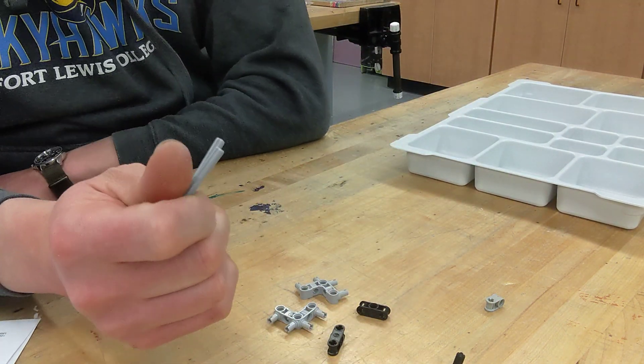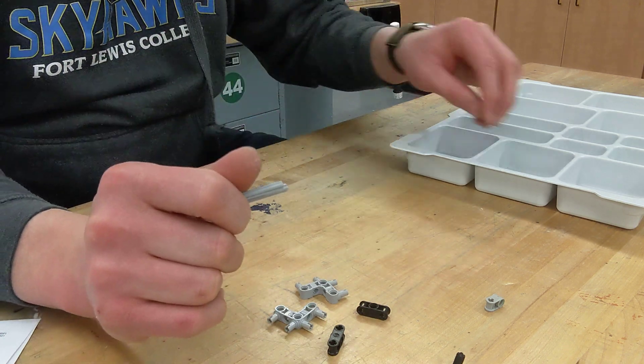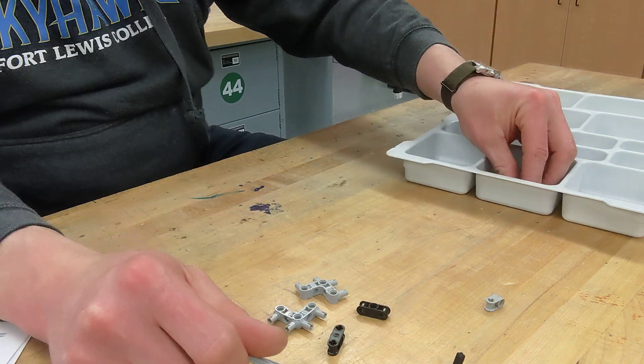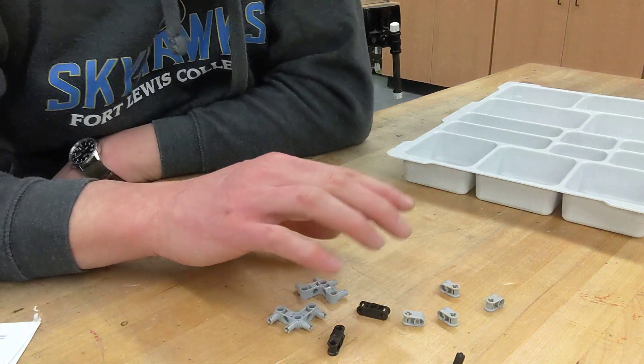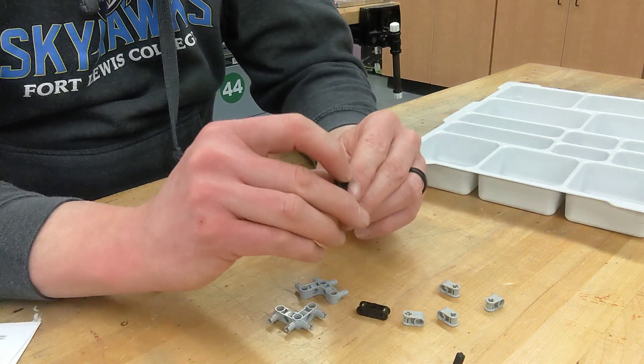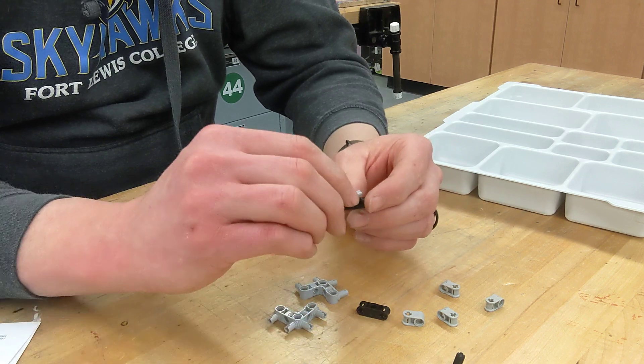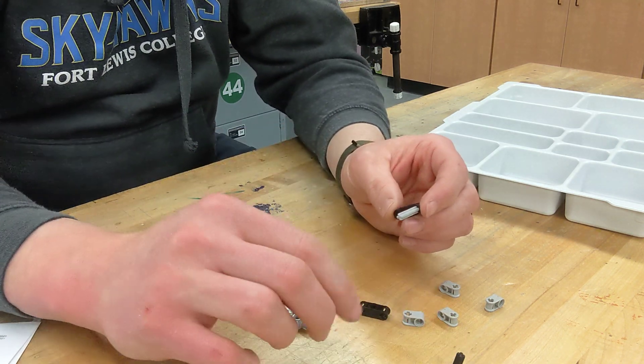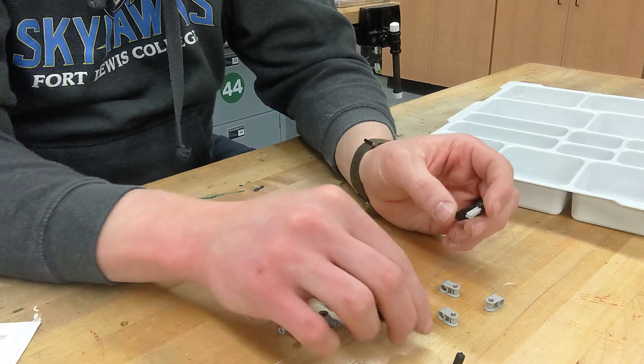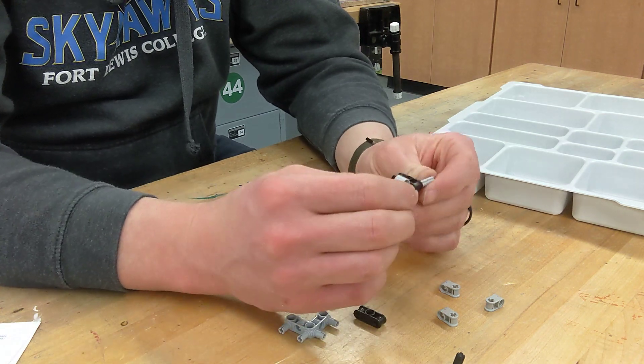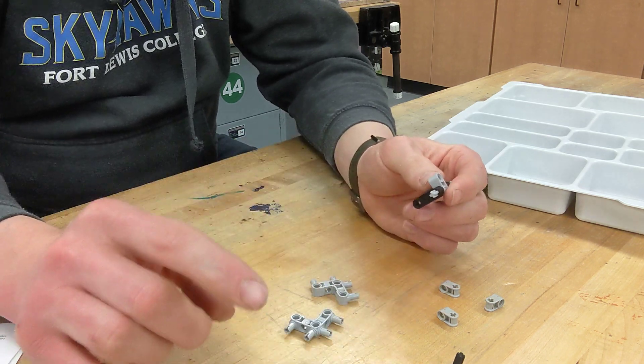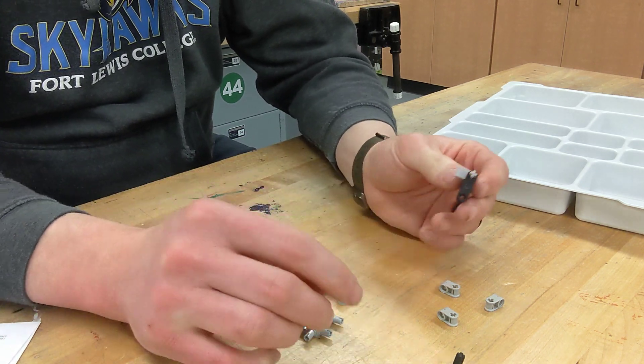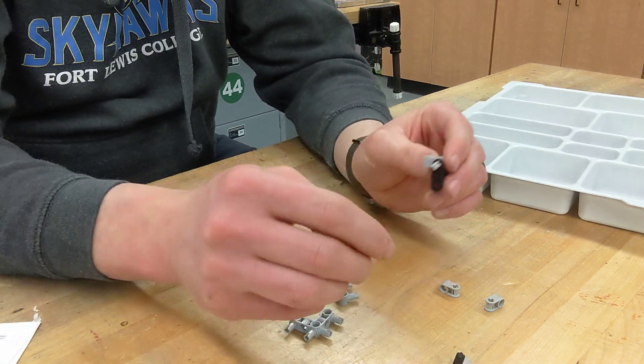And we're going to need two axles that are five mods, and we should have, we're going to need four more of these cross blocks. So with this, what we are going to do is we are going to build out the apparatus that will connect to our bot. So we're going to build it like so.